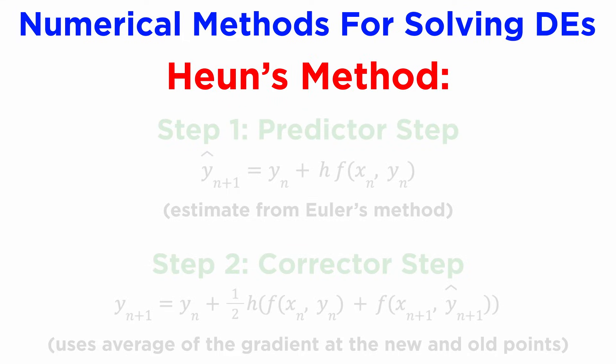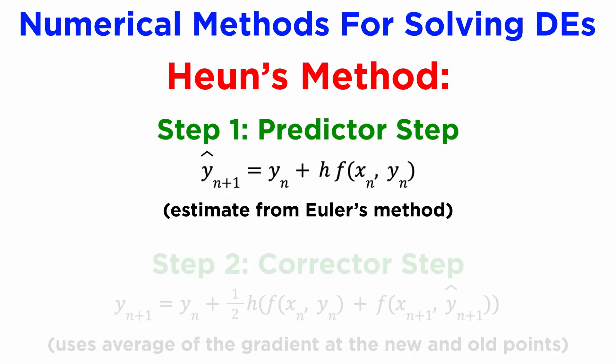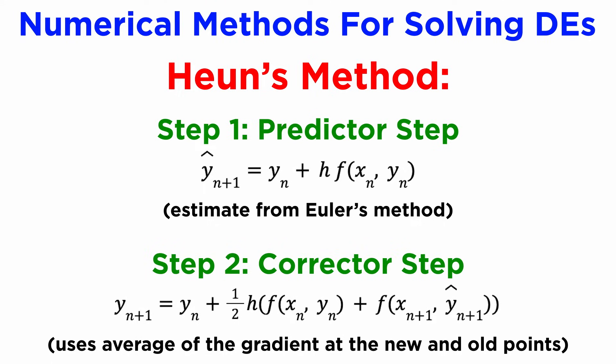An algorithm known as Heun's method, which is also simply called the improved Euler method, uses a two-step predictor-corrector approach to compensate for the change in gradient as we step from one point to the next. In Heun's method, the first step is the same, but then instead of using the old gradient, we replace it with the average of the gradients at the old point and the new point, giving a much closer approximation.